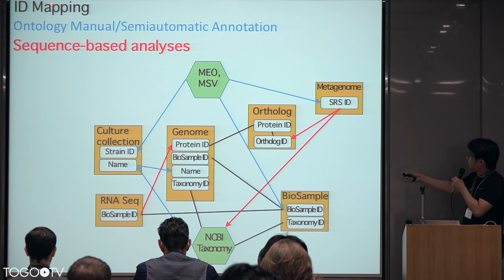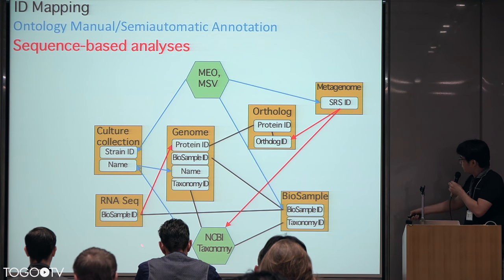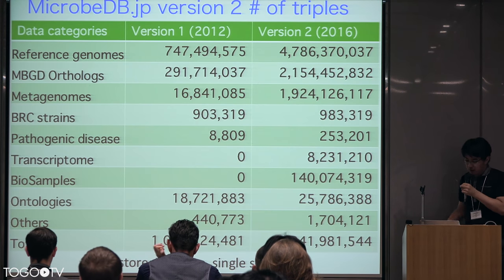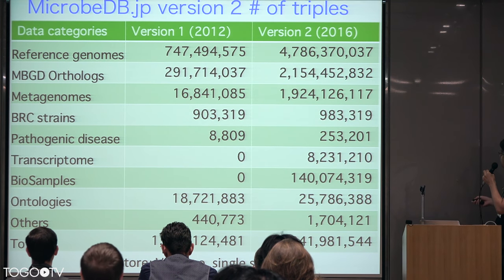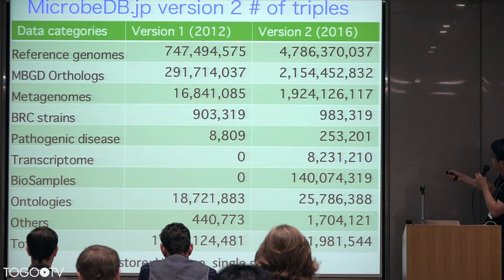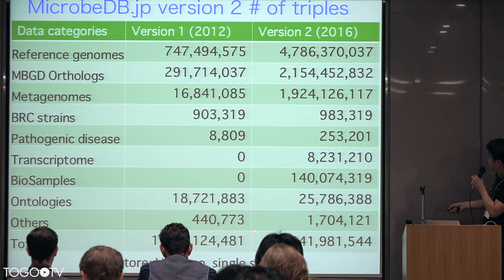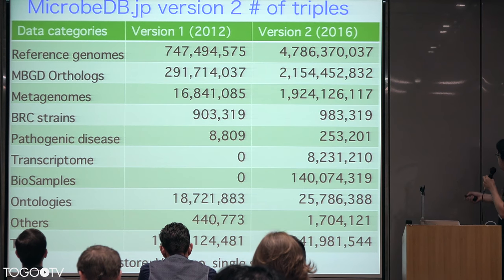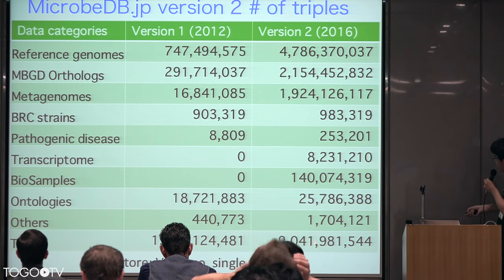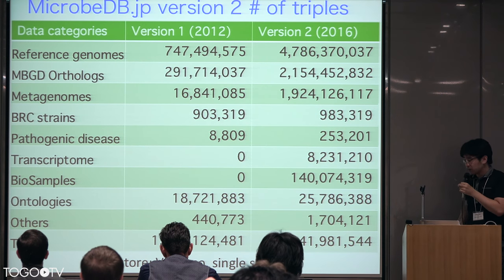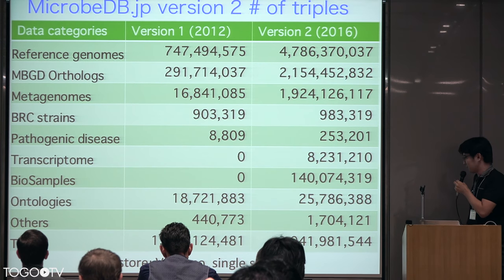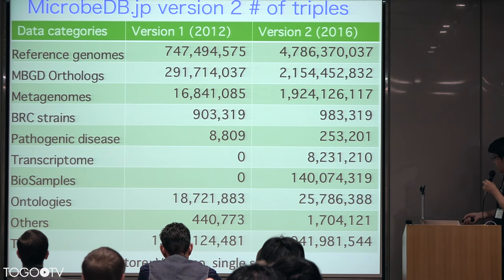After using ID mapping, ontology manual annotation, and sequence-based analysis, we can link many kinds of heterogeneous microbial data. Using this workflow, we developed MicrobeDB with all data described in RDF triples. Version 1 in 2012 had one billion RDF triples, but version 2, the last year's version, already has nine billion RDF triples. We store this in a single virtual server, but handling nine billion triples on a single server is very difficult.